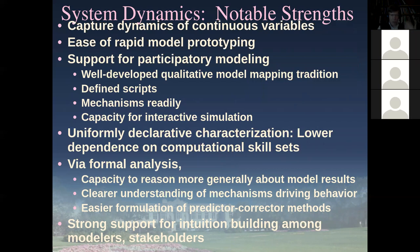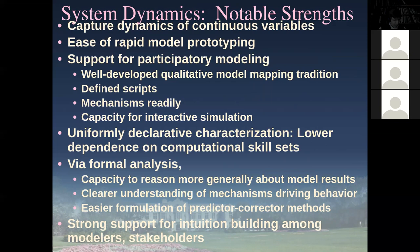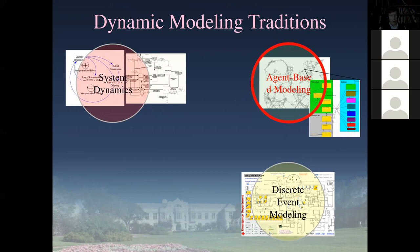Some notable strengths of compartmental or system dynamics modeling include capturing dynamics of continuous variables, rapid model prototyping - you can build it without writing code in a traditional sense - and a capacity to reason deeply about feedback structures. It has some limitations dealing with heterogeneity. In areas like mental health, it runs into two challenges: capturing histories of individuals, which it can't do very well, and capturing network structures or spatial locations. So let's talk about agent-based modeling, which can do these other things but has different trade-offs.